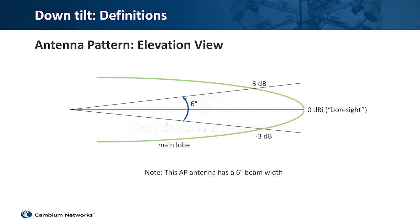We're going to measure the beam width of the antenna. That's just the angular measurement between the 3 dB down points. You'll notice that this antenna has a 6 degree beam width, so it's plus or minus 3 degrees to the 3 dB down points.